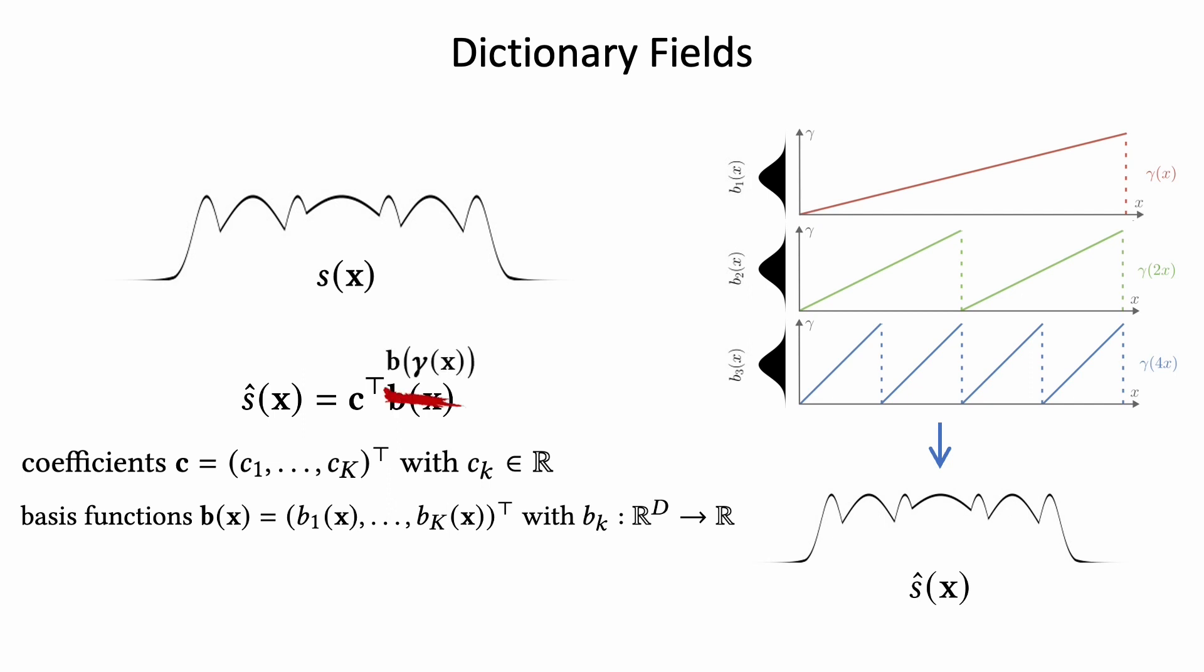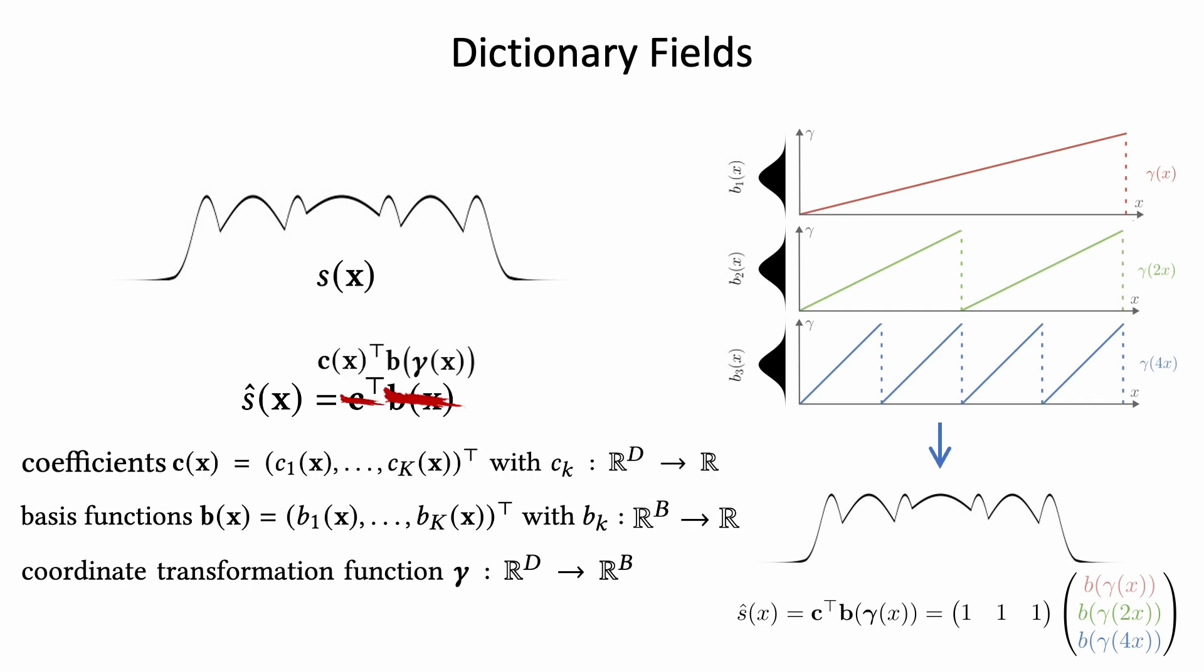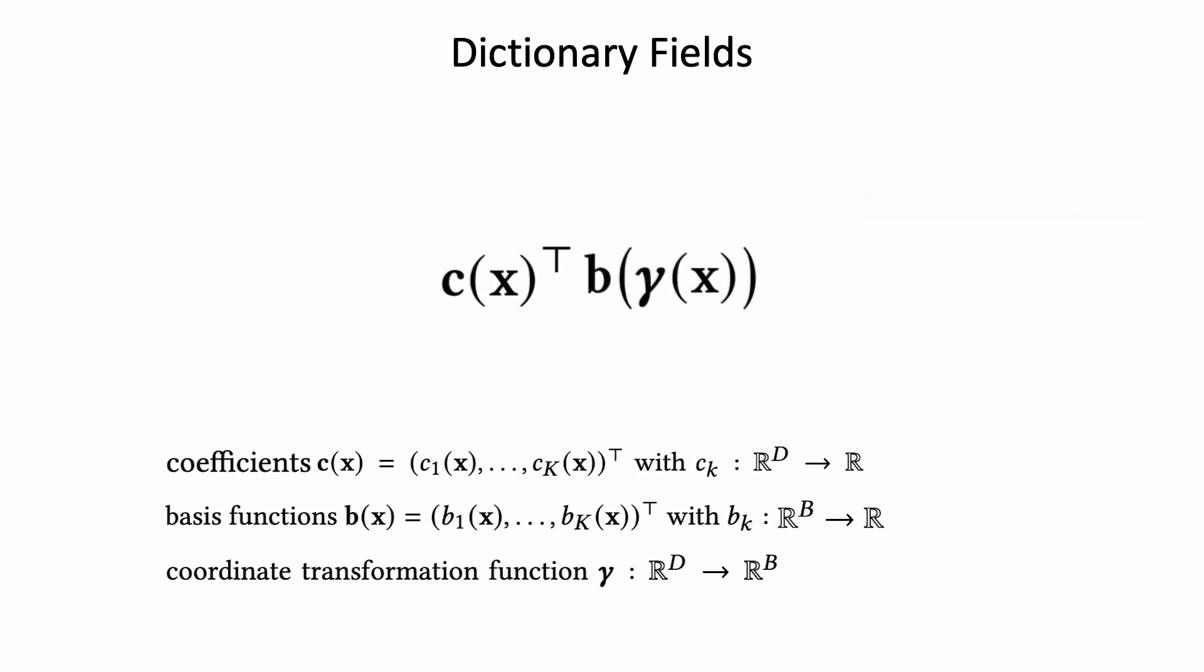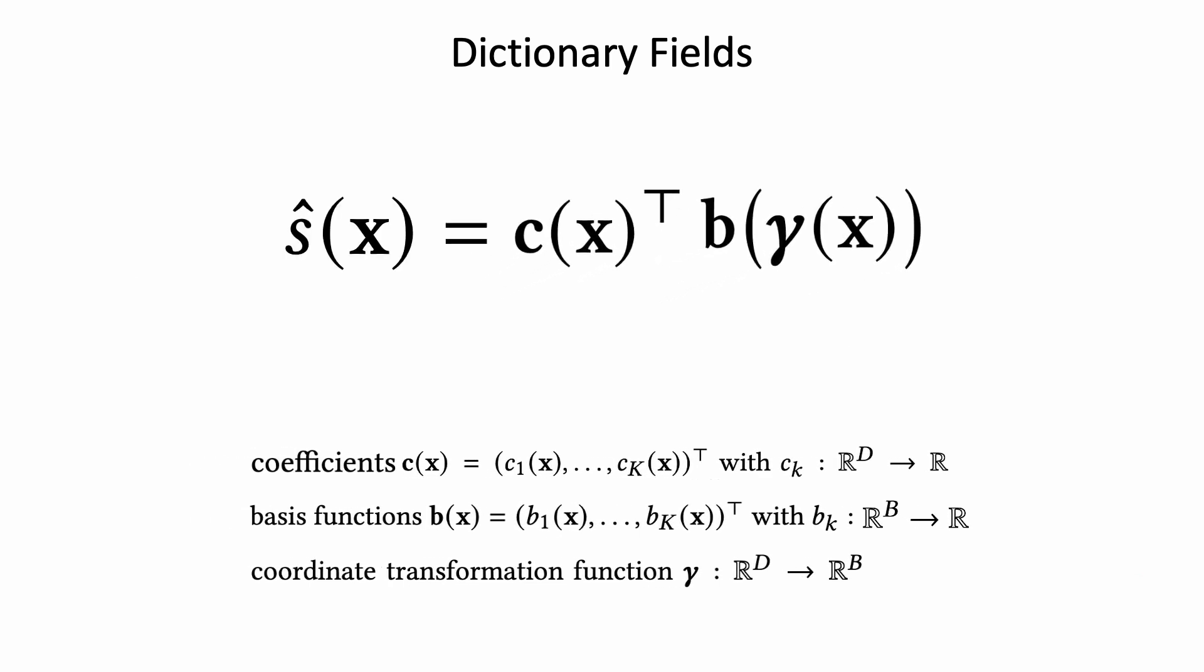To do so, we transform the coordinates of the basis functions via a periodic, spatially varying coordinate transformation function γ. Furthermore, we exploit a spatially varying coefficient field for stronger model capability.